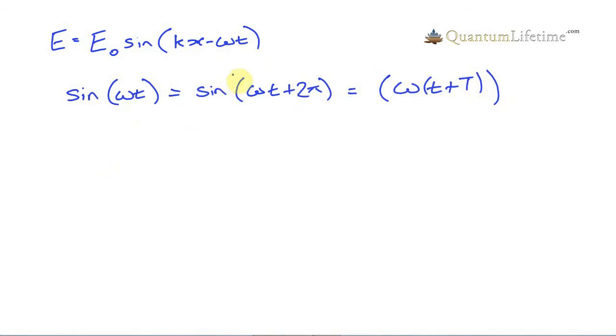And if we add that to t before we multiply by omega, if we move on that amount of time, then we must get the same value out for sine. Sorry, I missed off a sine here. Here we go. So this must give us the same value as this and this because of the periodic nature of the sine function.